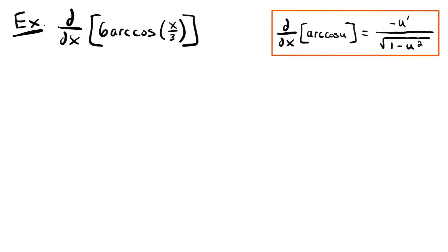Next we want to find the derivative of 6 times arccosine of x divided by 3. We need to use a different derivative rule for the arccosine function, but you'll notice that the derivative of arccosine is almost the same as arcsine — the only difference is that it's negative. Using this derivative rule, we have the constant multiple 6 times the derivative of arccosine of x divided by 3. In this case, u is x divided by 3, so the derivative of u — which is 1/3 times x — is just 1/3.